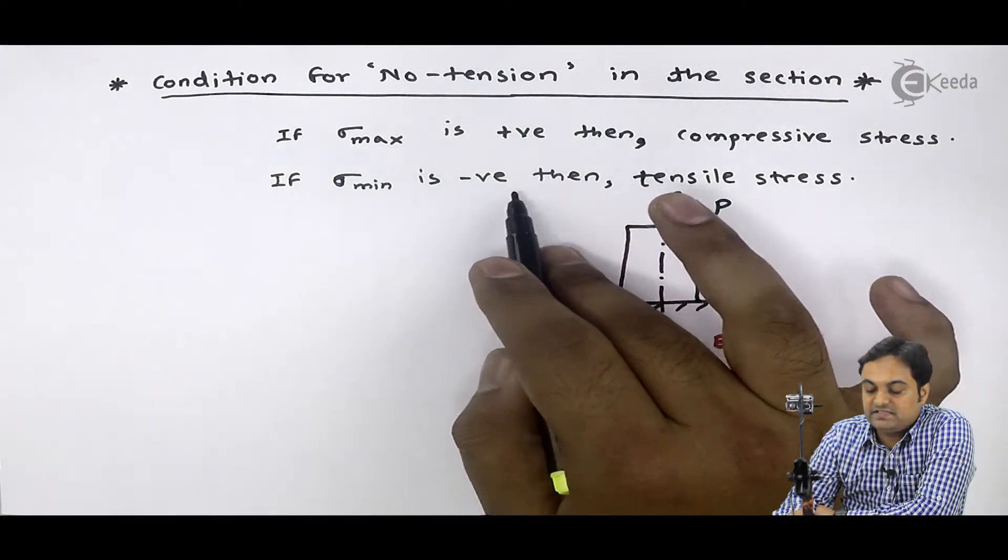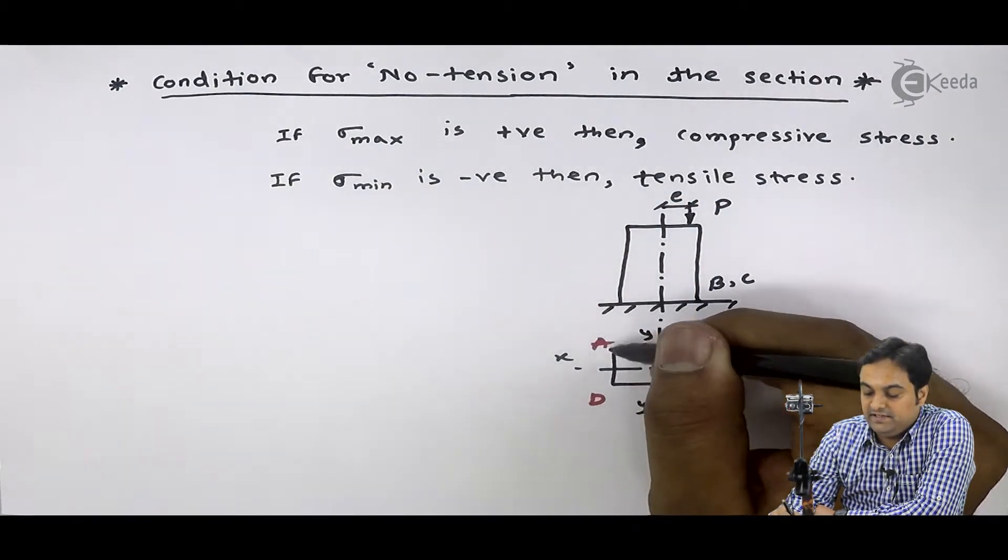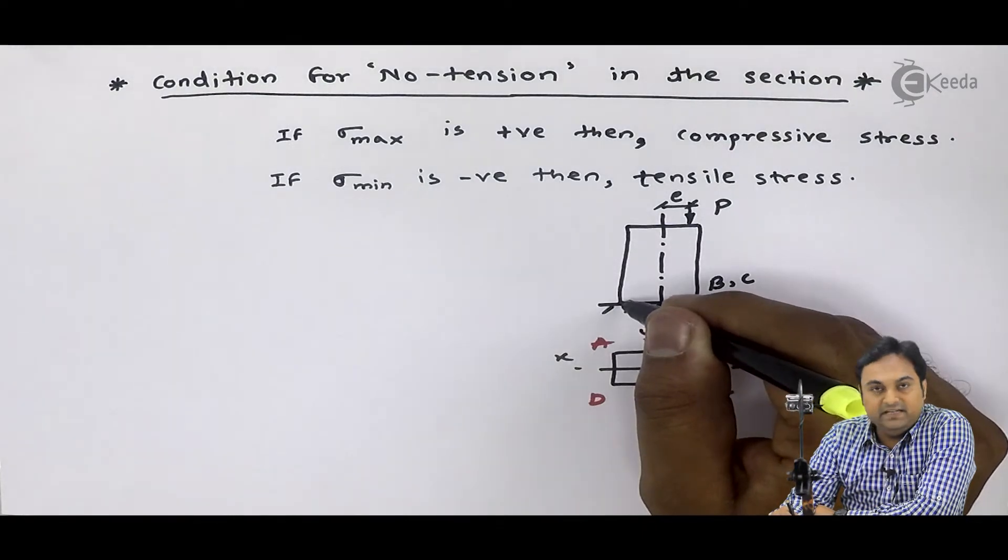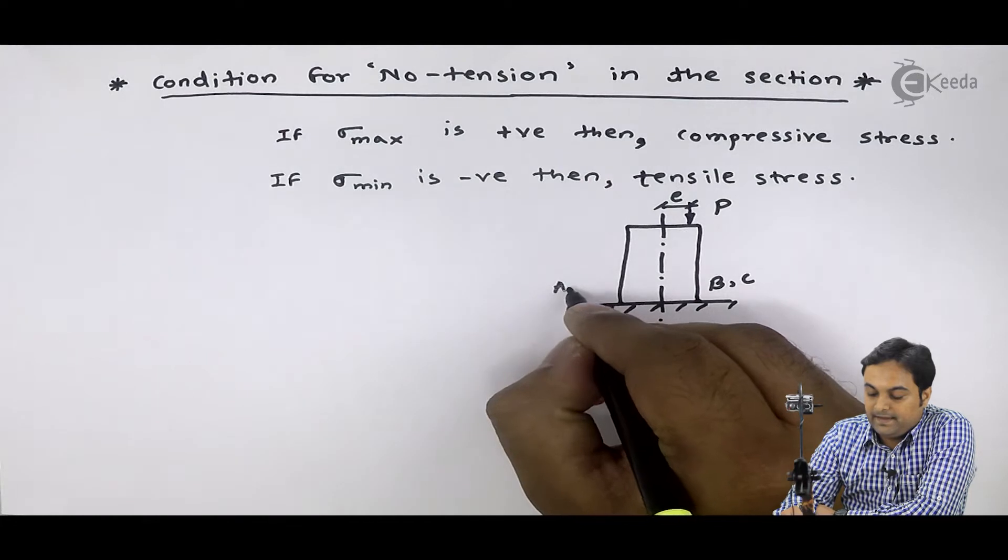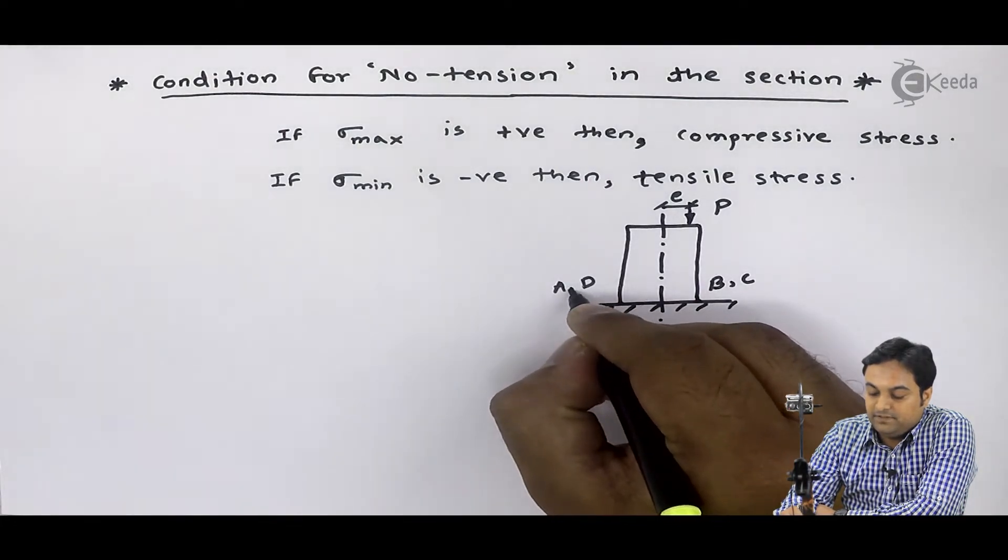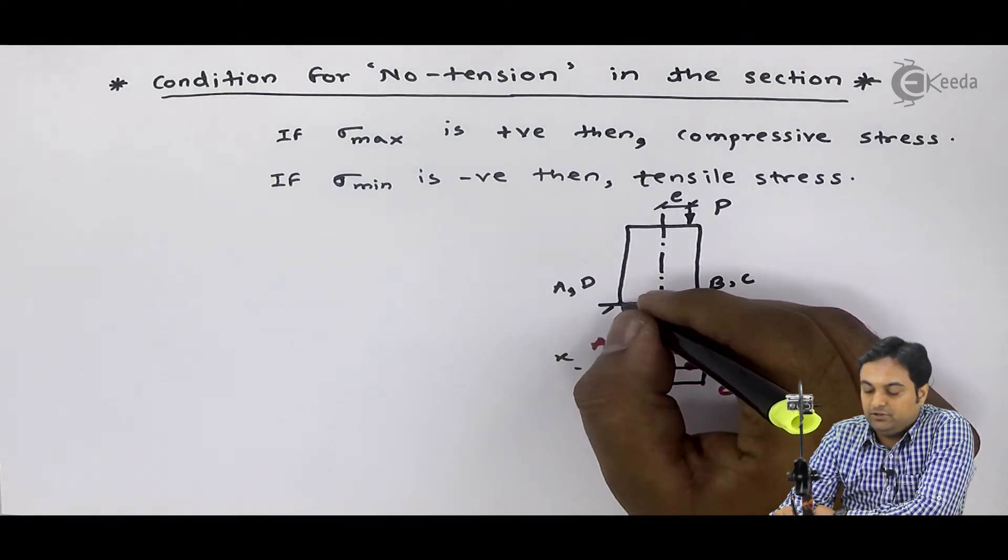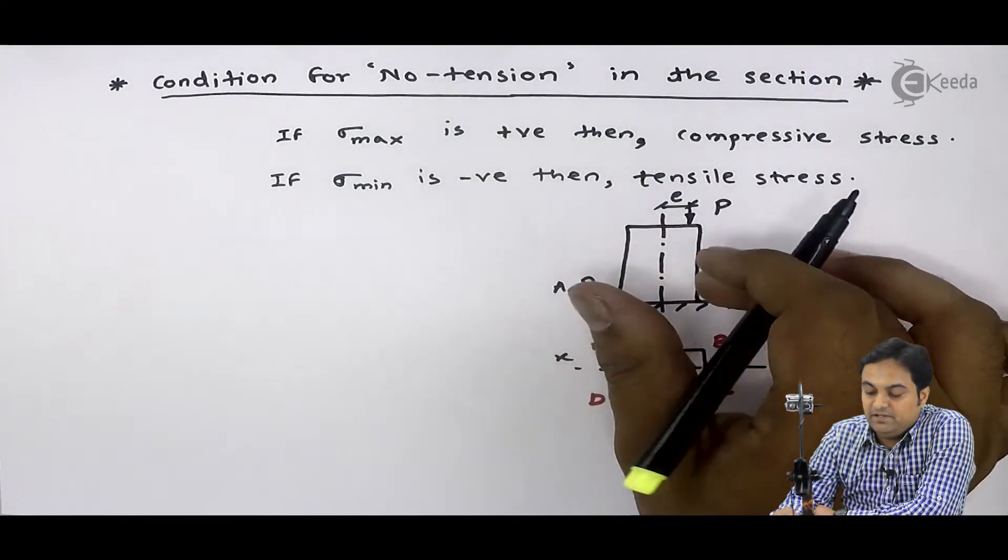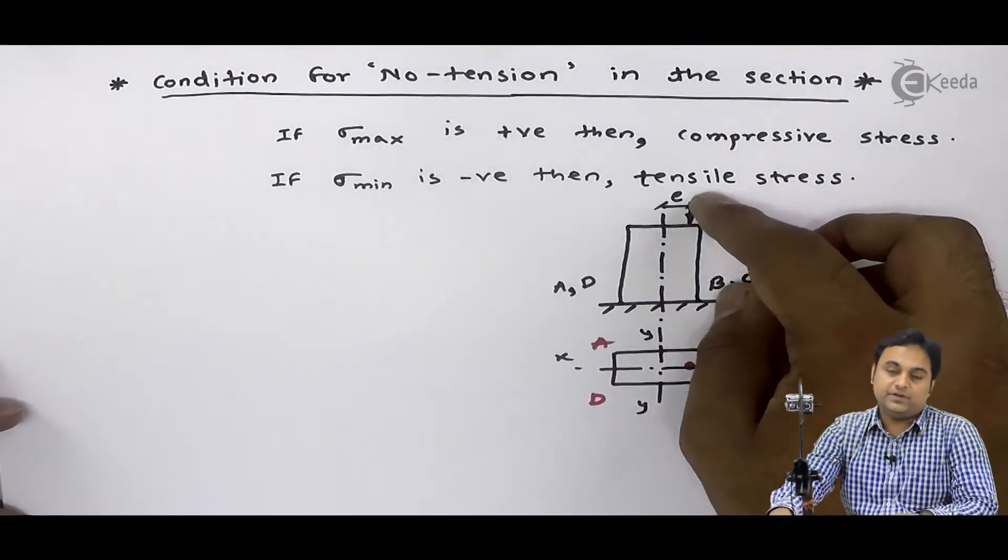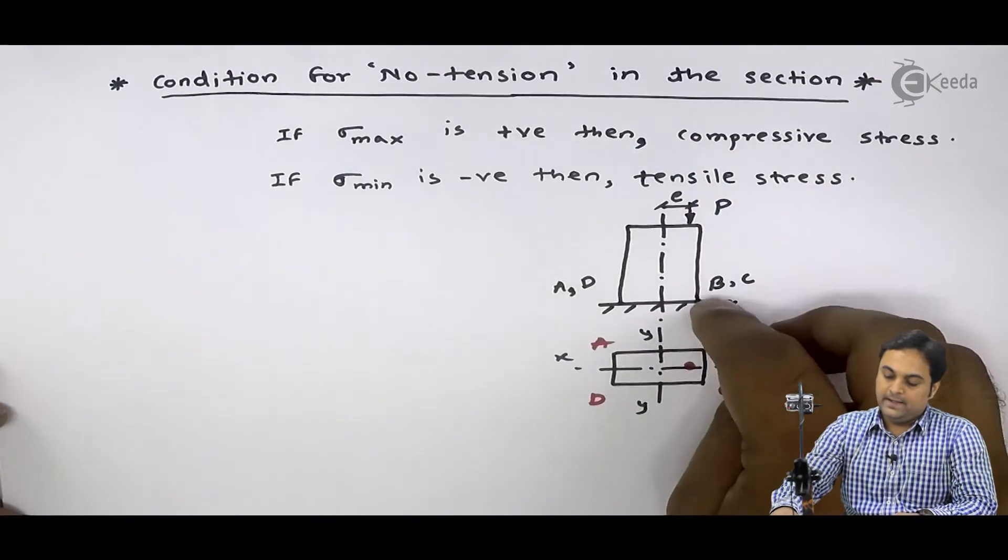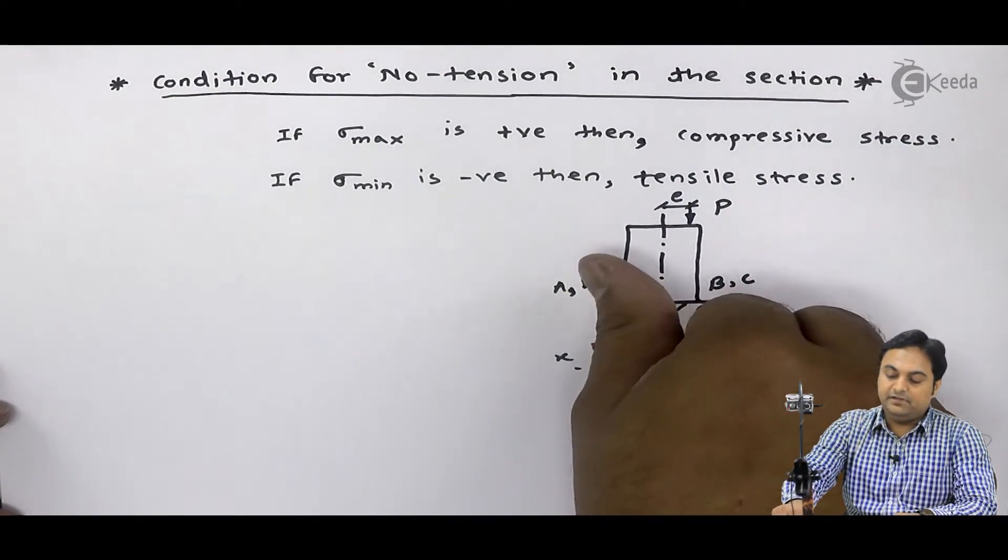And if sigma min is negative, then tensile stress means minimum stress will be at ad. And here, if ad is minimum means the stress at a and d is minimum. Then what will happen? If there is minimum stress, because of that, ad will be lifted. As soon as eccentric load comes, b, c will be pressed against the ground and ad will be lifted.